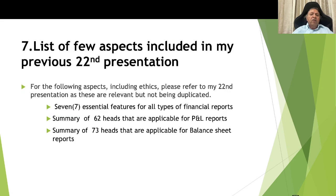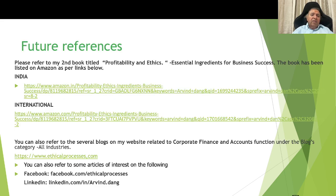A few aspects included in my previous 22nd presentation: seven essential features required for all types of financial reports; summary of 62 heads applicable in the P&L report, including purchase-related 4 heads and employee-related 10 heads and so forth; and summary of 73 heads applicable to balance sheet reports, which will be taken up separately. These aspects are more fully covered in my second book titled 'Profitability and Ethics: Essential Ingredients for Business Success,' listed on Amazon at the link provided. You can also refer to several blogs on my website related to the corporate finance and accounts function.